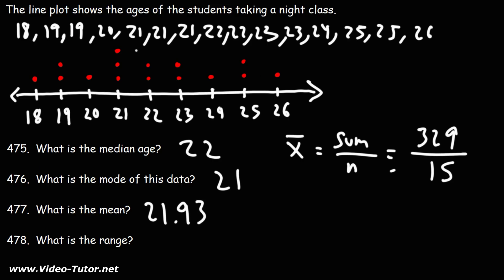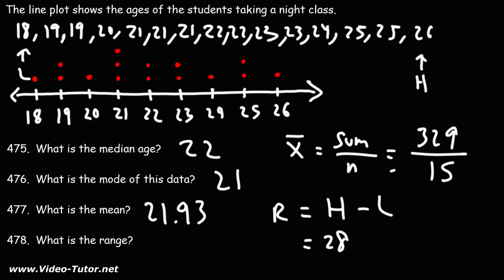So the mean is between 21 and 22. What is the range? The range is the difference between the highest number and the lowest number. The highest number is 26 and the lowest is 18, so the range is 8 — the ages are 8 years apart.